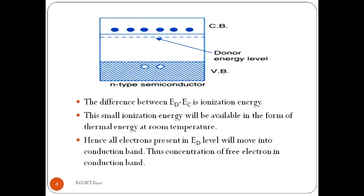Due to the increase in electron concentration, the recombination rate also increases. Therefore, a few electrons will recombine with holes present in the valence band. Due to this, hole concentration decreases and becomes less than the intrinsic carrier concentration.